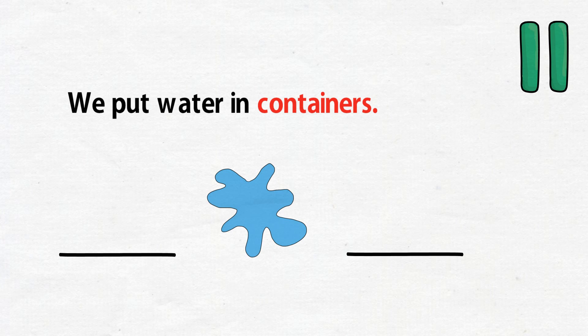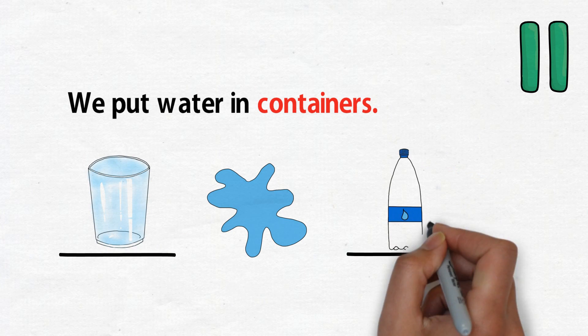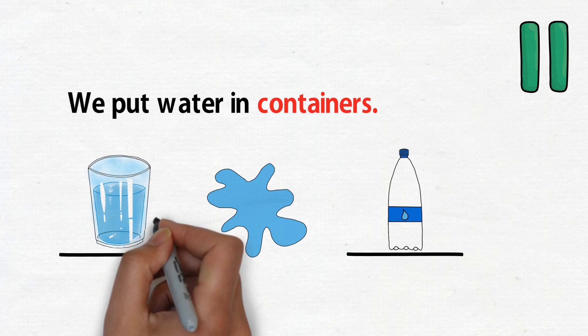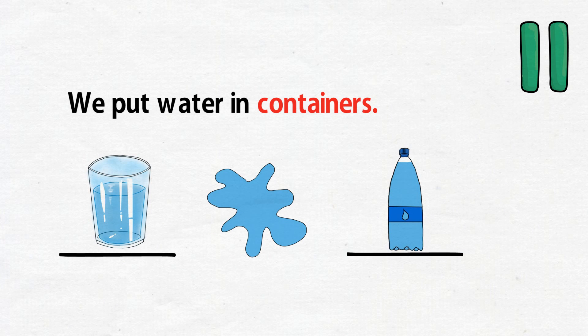Hopefully we have the same answers. The answers are a glass and a bottle. If you fill them with water, they become a glass of water and a bottle of water. Since these containers are countable nouns, we can start counting uncountable nouns.